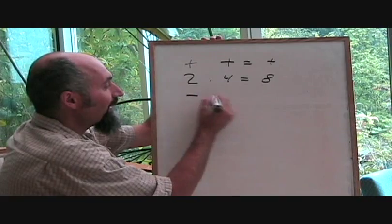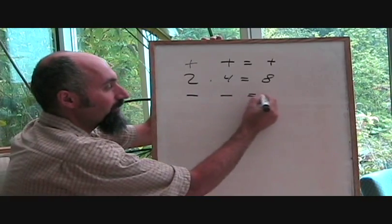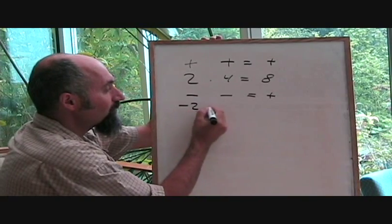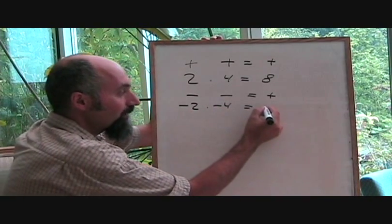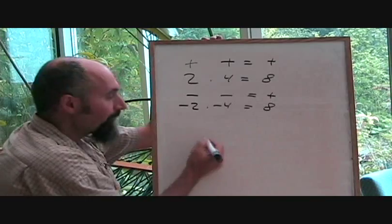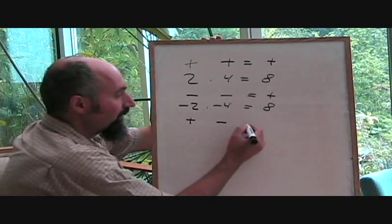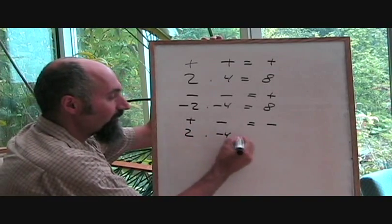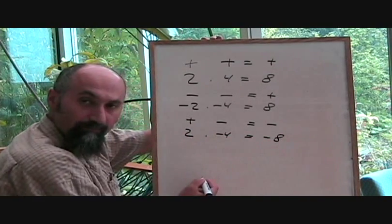If you've got two negative numbers multiplied together, that's going to give you a positive number. So negative 2 times negative 4 is going to be positive 8 again. If you have a positive number times a negative number, that's going to be a negative number. So 2 times negative 4 is going to give you negative 8.